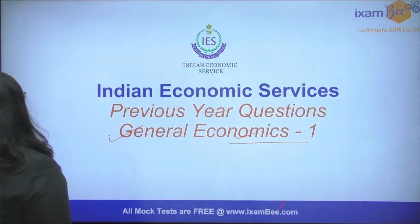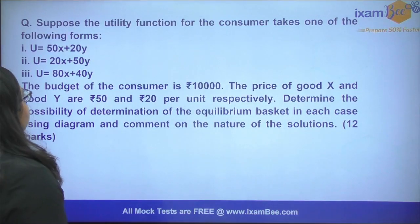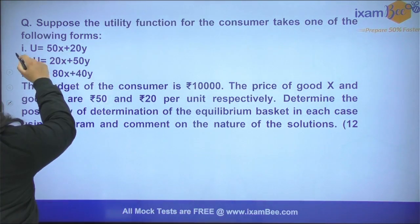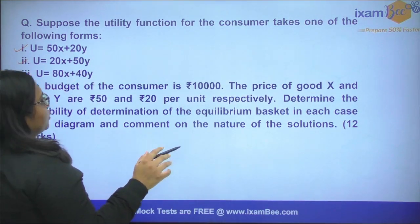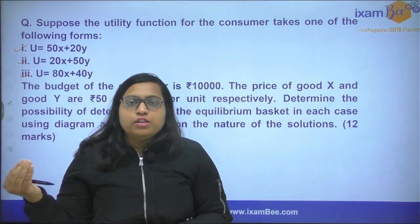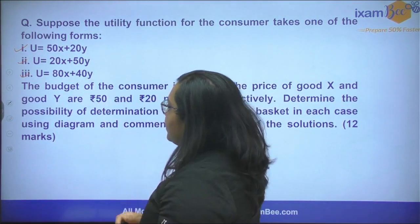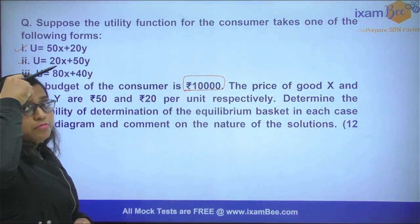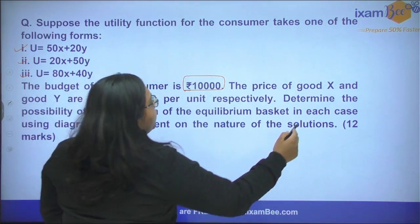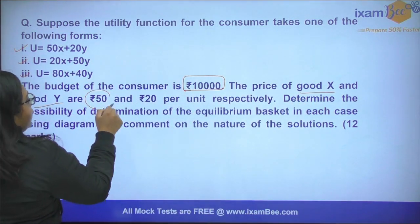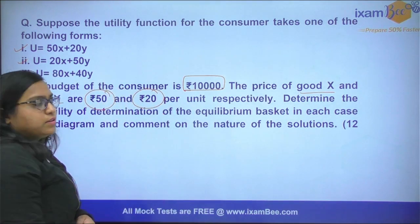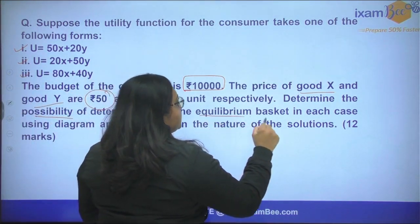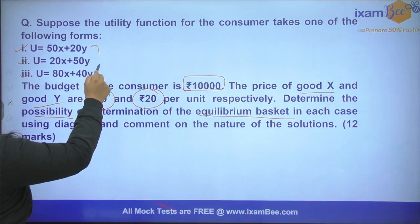Let's start the video. The question says that suppose there is a utility function that is given to you, and these are the forms of the utility function. The question has three parts, giving you utility functions of three kinds. It also says that the budget of the consumer is 10,000 — this is the income which the consumer has. The price of good X and good Y are $1.50 and $1.20 per unit. You have to determine the possibility of an equilibrium basket in each of these three scenarios.